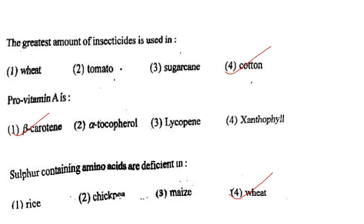Next one: The greatest amount of insecticides is used in option 1, wheat; option 2, tomato; option 3, sugarcane; option 4, cotton. Answer is option 4: cotton.